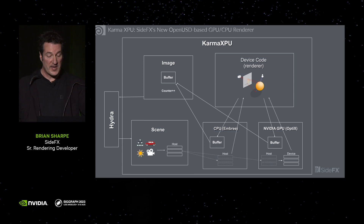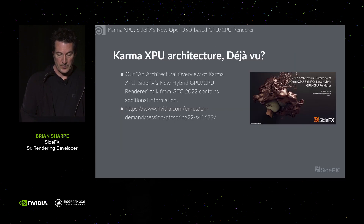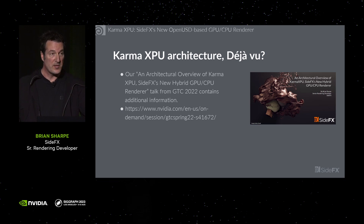If a device fails mid-render, its incomplete pass will be picked up by another device and rendered, meaning the system is very fail-safe. If those two slides seem familiar, it's because we gave a talk at GDC 2022 on the architecture of XPU which went into much more detail. For anyone interested, I suggest you take a look.